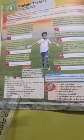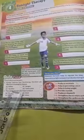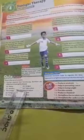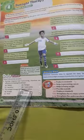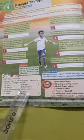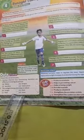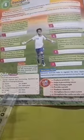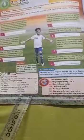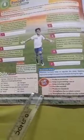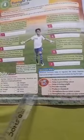Question number 2: Sunlight Therapy also helps to reduce — there are 4 options: hunger, fever, thirst, and stress. The answer is stress.